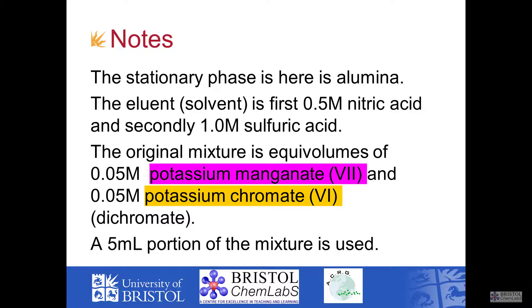In the video, we're going to show you how to set up a column and then use it. The stationary phase that we're using is alumina, or aluminum oxide, and the eluents or solvents for chromatography are 0.5 molar nitric acid to remove the potassium manganate 7, or 1 molar sulfuric acid for the removal of the potassium chromate 6.